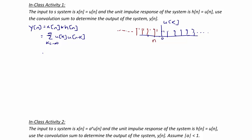the only time we're going to get non-zero values is when n is greater than 0. This changes our limits of integration to be k equals 0 to n. At that point, the overlap is 1 for u of k and 1 for u of n minus k. For example, if n was equal to 1, then the summation would be 2. If n was equal to 2, the summation would be 3, and so on.